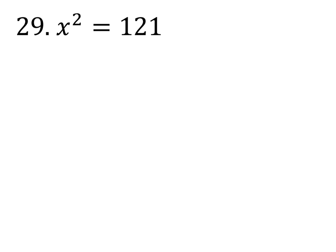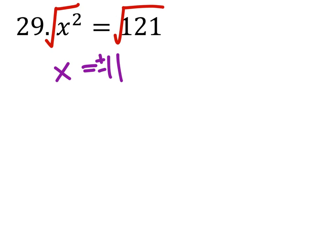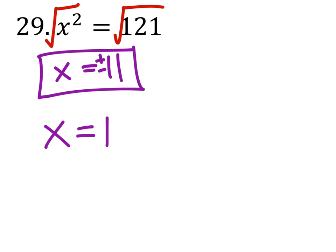So the inverse property of squares is to square root both sides. 121 is a perfect square, so x equals... Very good — we do need the positive, negative part of that. If you wrote it out like this, you would be good as well.